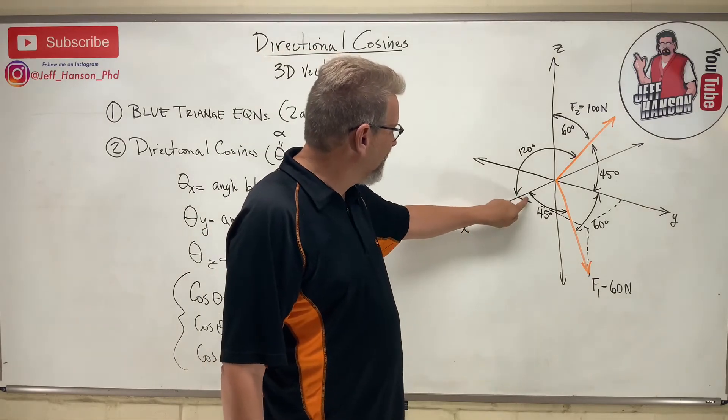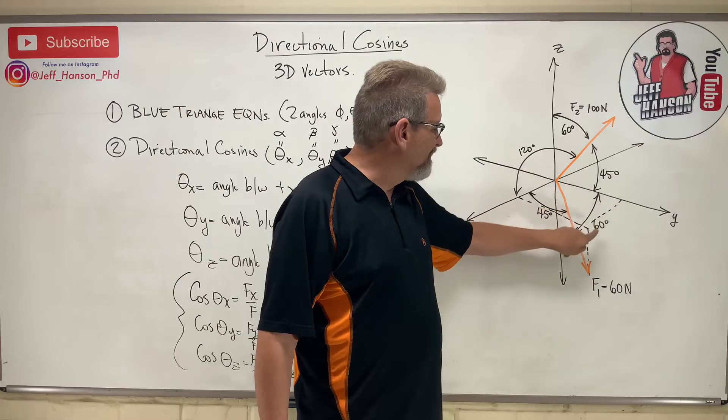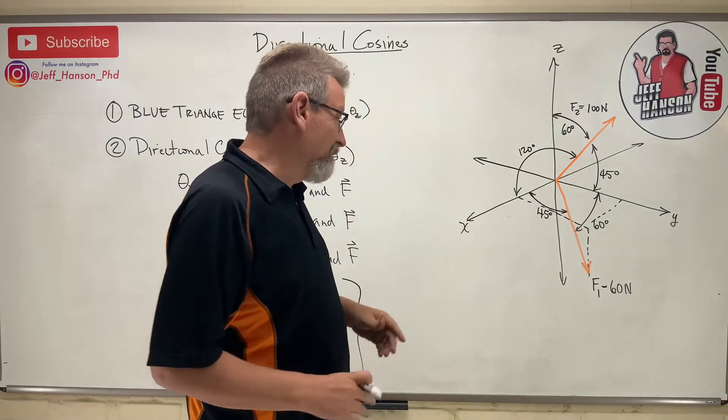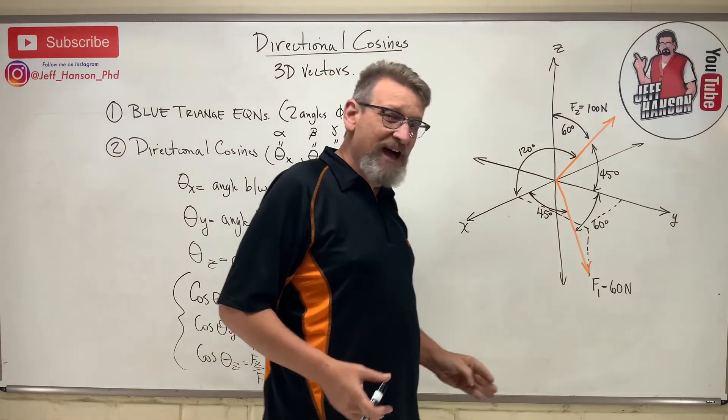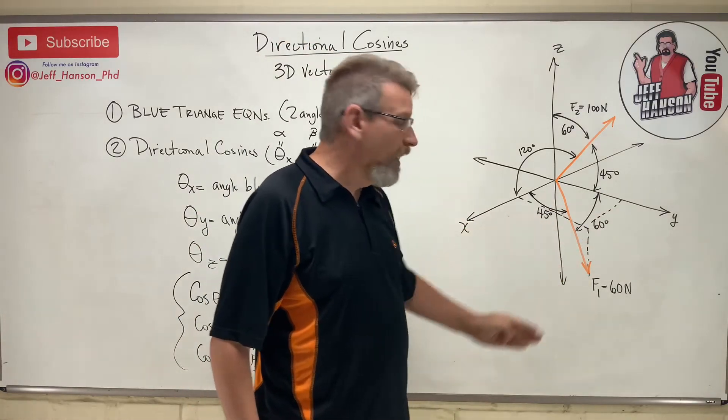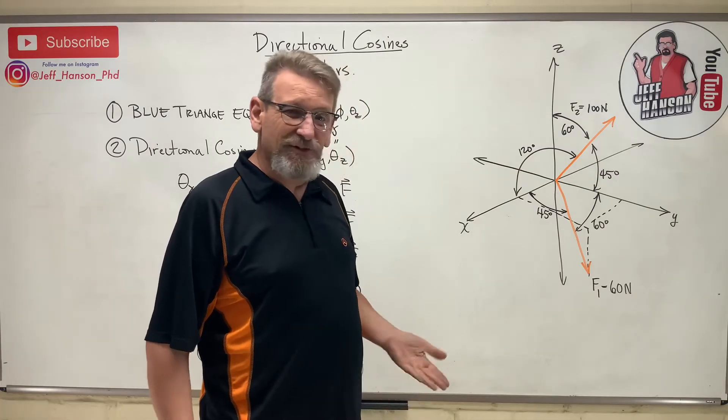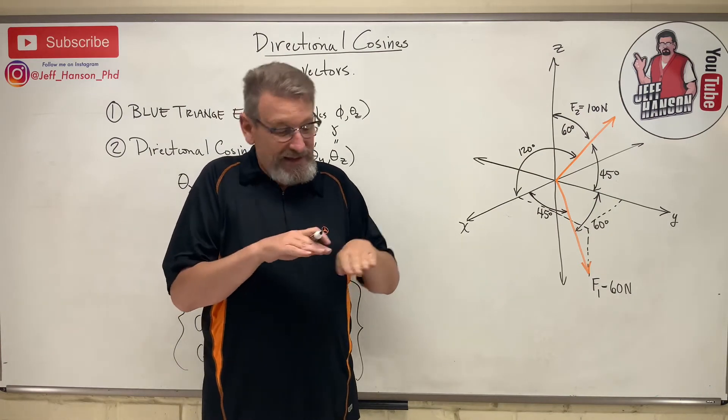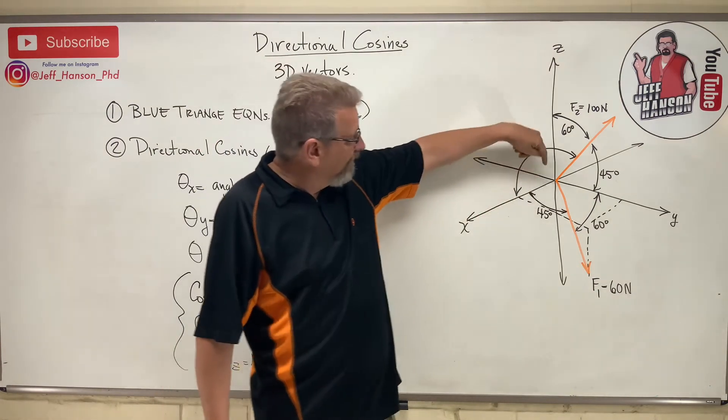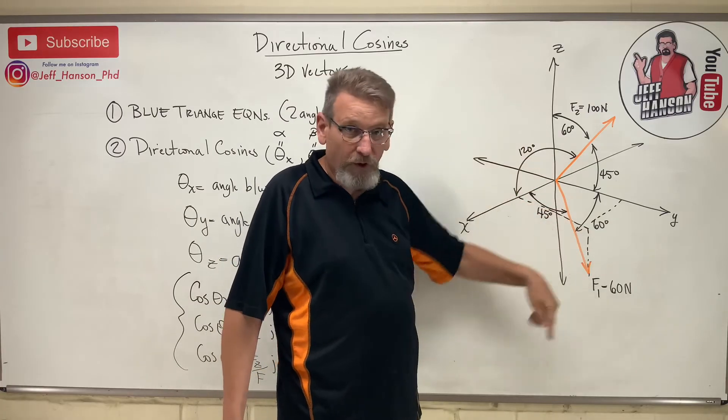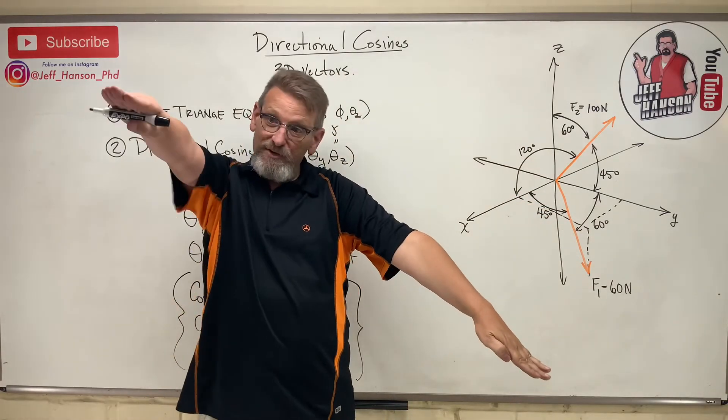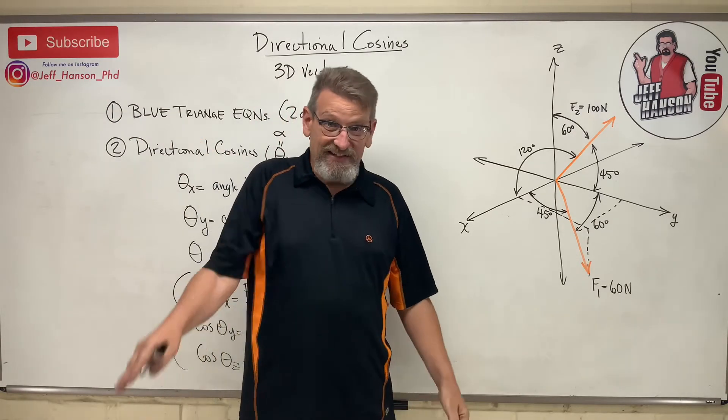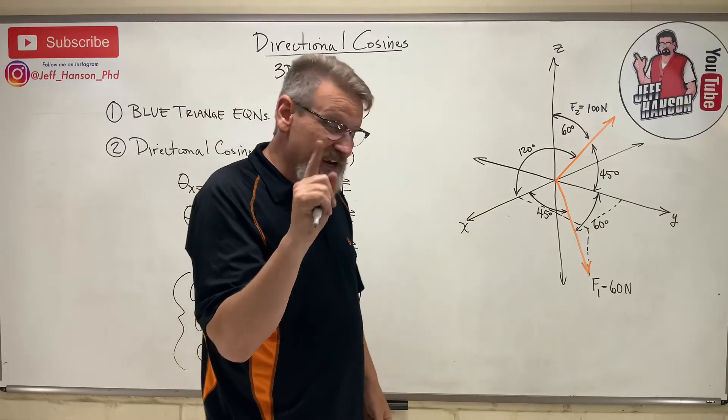They gave us, from the x-axis to the vector is 45, from the y-axis to the vector is 60. Johnny Weaksauce looks at this problem and he's like, man, I thought x to y was 90 degrees, and you're telling me it's 105. Johnny Weaksauce, check it out. That 45-degree angle is not in the x-y plane. It's in this tilted plane down to the vector because this vector is going into the floor.